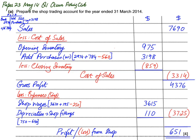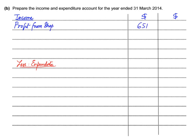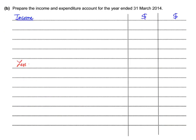The second part requires an income and expenditure account — this is the income statement for the entire organization. In this account we do not write sales, cost of sales, or carriage; there are only two headings: Income and Expenditure. We write the profit from shop (651) calculated earlier. Since the shop chapter is closed, no further shop figures are needed here.